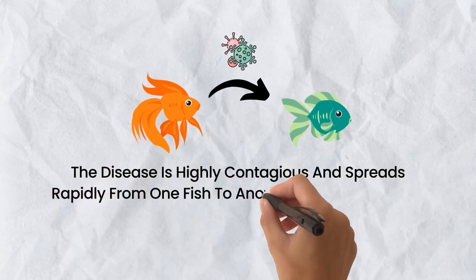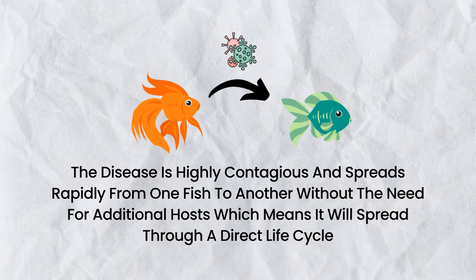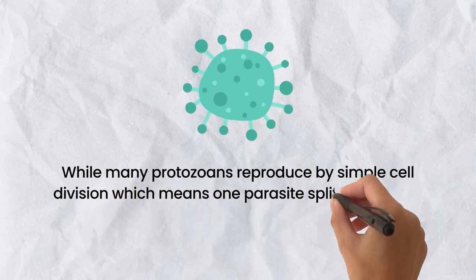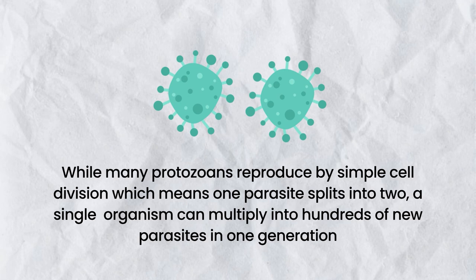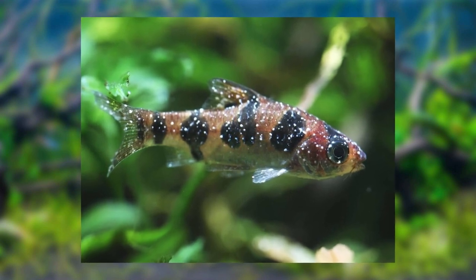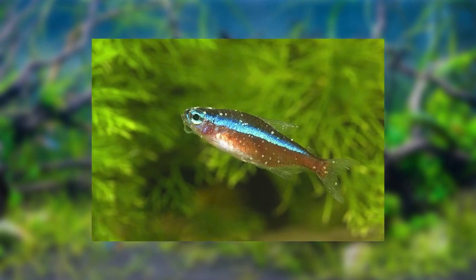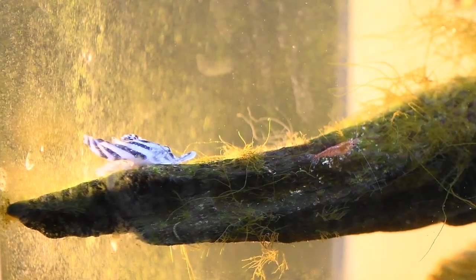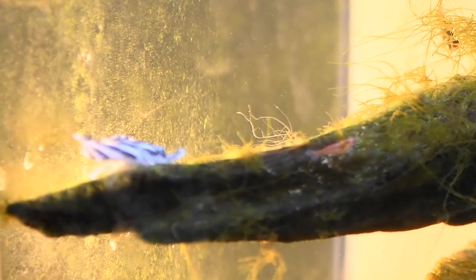The disease is highly contagious and spreads rapidly from fish to fish without the need for additional hosts, meaning it spreads through a direct life cycle. Outbreaks often appear when water temperatures are changing rapidly, and decreased fish immune function also favors infection. The disease is particularly severe when fish are crowded. A single organism can multiply into hundreds of new parasites in one generation, making early detection crucial. It is an obligate parasite that cannot survive without live fish, and it is capable of causing massive mortality. An outbreak is a true emergency — if left untreated, this disease may result in 100% mortality.